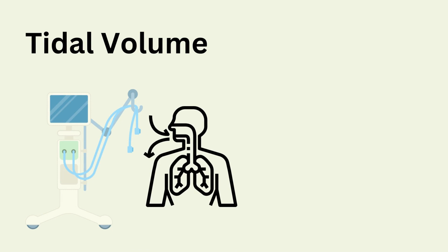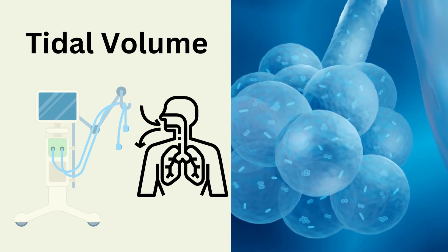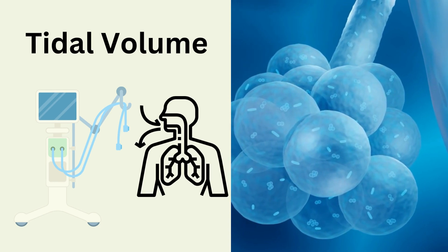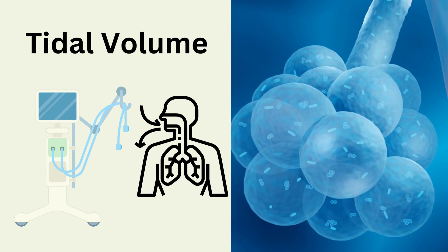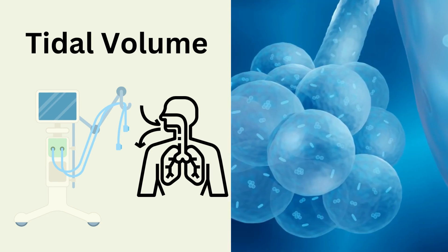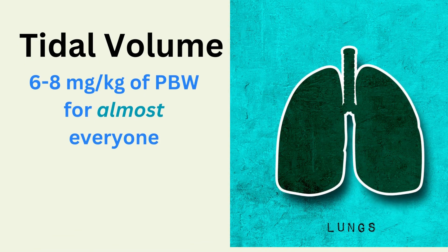The first setting to look at is the tidal volume. This is a favorite of the NBRC — there's a lot that can go wrong when choosing it, and it's a very important setting for your patient. If you set the tidal volume too high, it could cause irreversible lung damage by over-distending the alveoli; if you set it too low, it could under-ventilate the patient.